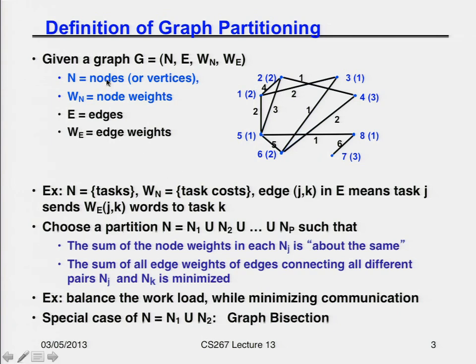I'm going to have nodes — labeled in blue here — also called vertices; I'll go back and forth in notation. Each one can have a weight, because each vertex is going to represent a job I need to do, and not every job takes the same amount of time. So the weights are the amount of work you have to do. Then there are edges which connect vertices, representing communication that has to happen. Not every communication is the same, so there will be edge weights as well, to say how much has to move from this task to that task.